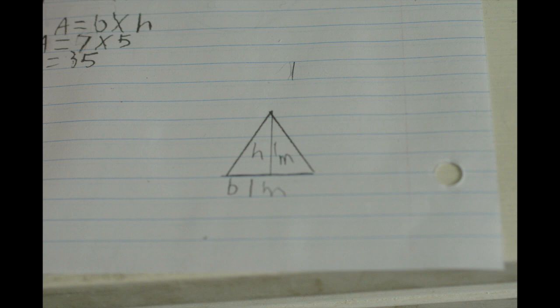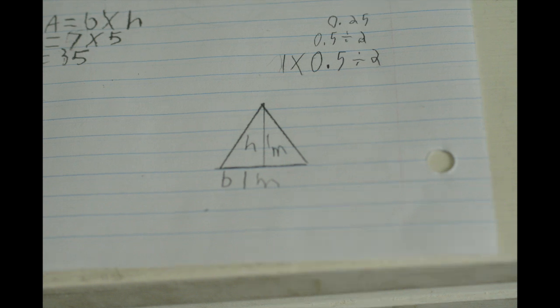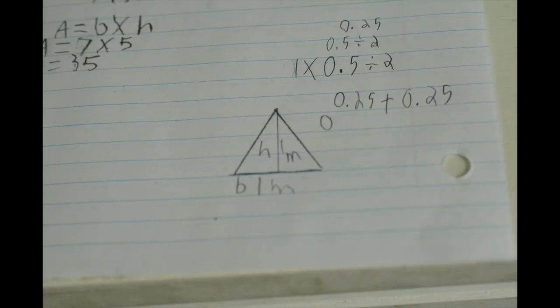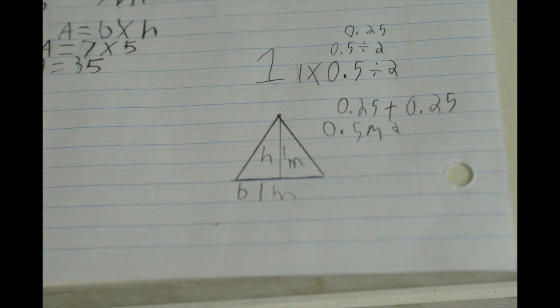The first way is by splitting the triangle in half and using the two edges that make a right angle. So you take 1 times 0.5 and divide it by 2. So 1 times 0.5 is 0.5, and then you divide that by 2, which is 0.225. Now you take 0.25 and add it with 0.25 to give you 0.5 meters squared.